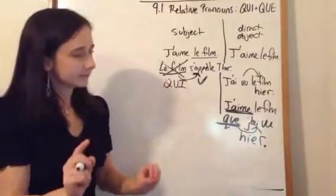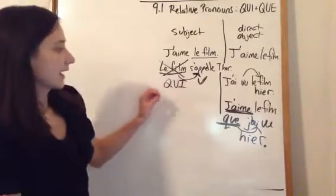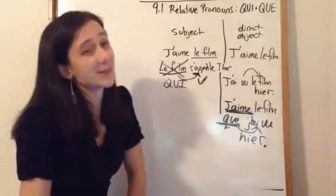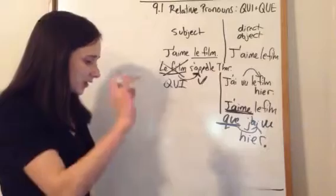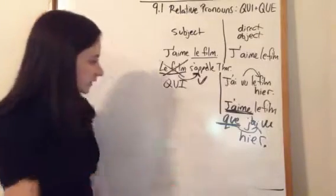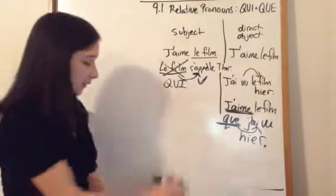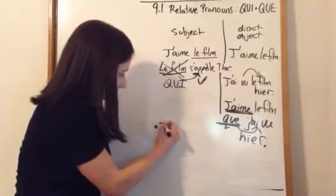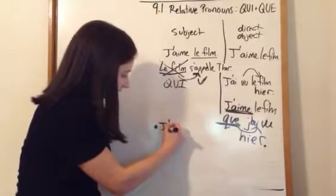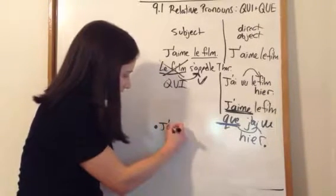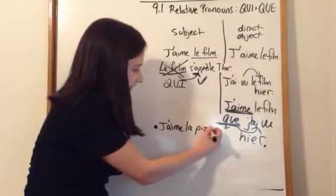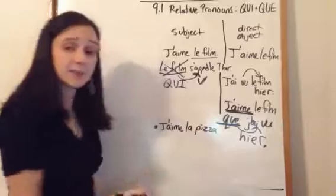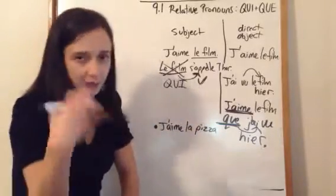Now, there are a couple little things here. If you put it in the passé composé, some weird stuff starts to happen. So, for instance, let's take this example here. With que, let's say, j'aime la pizza, I like the pizza, and we'll say, that I ate yesterday.